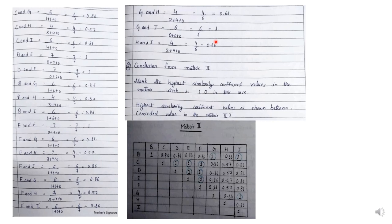Our conclusion from matrix 2 is to mark the highest similarity coefficient values in the matrix, which is 1 in this case. From matrix 2 we conclude that B, G, I is one cluster and C, D, E, F is the second cluster. We do not separately list D, E, F because they are already included within the C, D, E, F cluster. So these are the two major clusters from matrix 2.